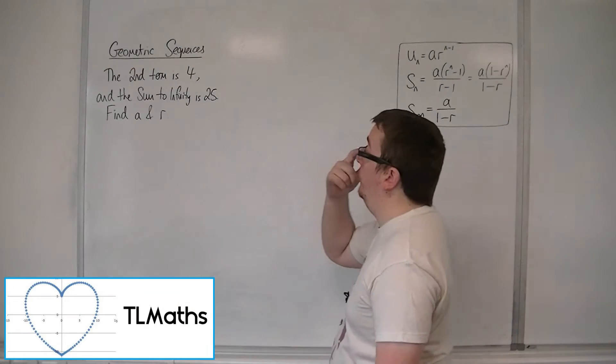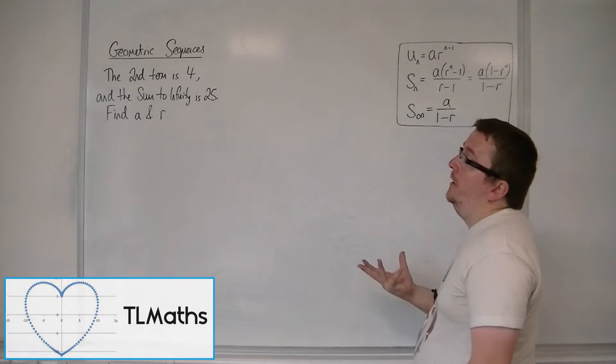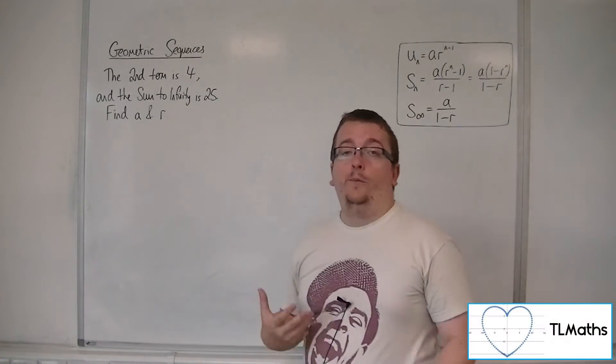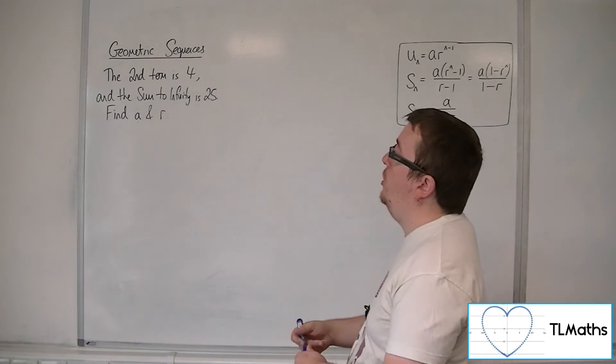So we have a geometric sequence where the second term is 4 and the sum to infinity is 25. We need to find the first term, a, and the common ratio, r.